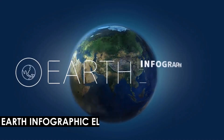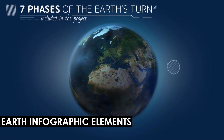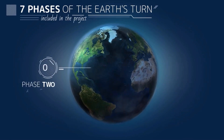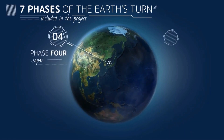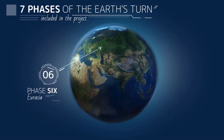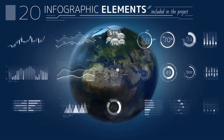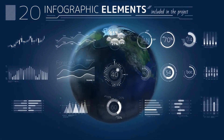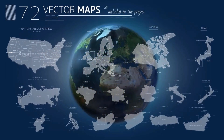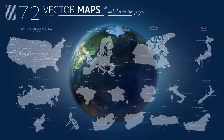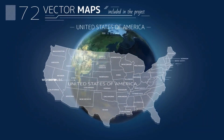Earth Infographic Elements is an AE template project allowing users to add infographics to a 3D animation of the globe. The project has seven stopping points and three versions of this globe including day, night, and mixed. I really love the look of this particular globe. It includes 20 customizable infographic elements, 59 icons, 72 maps, and 29 callouts. It has unified color management allowing you to easily adapt a project to your specific design. It's compatible all the way back to version CS6, and no extra plugins are required.